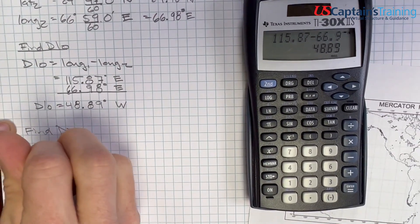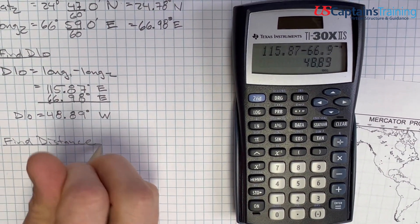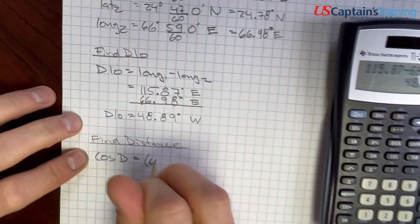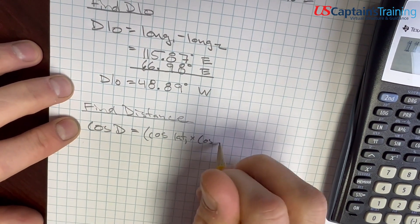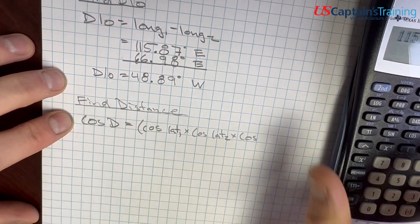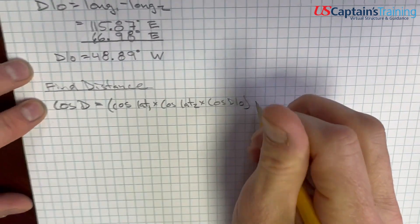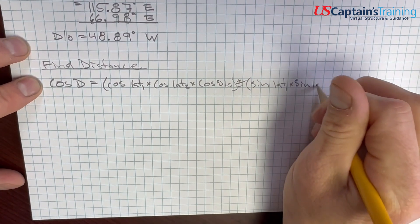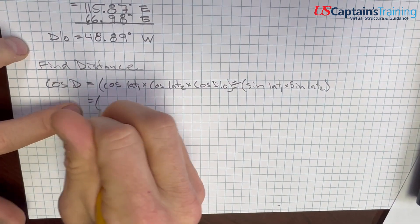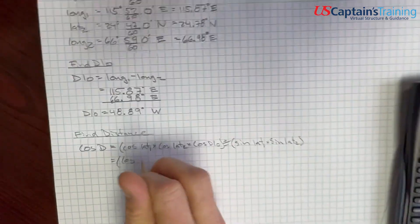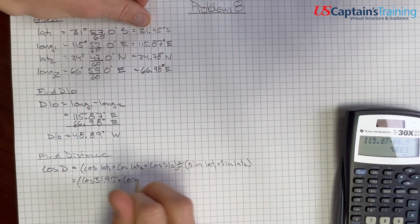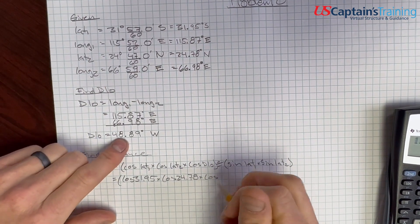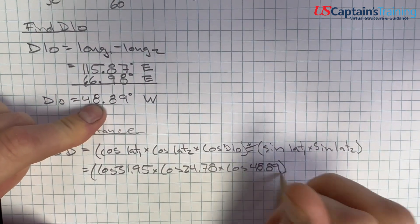Alright, now we need to find distance. Let's find distance. How do we find distance? To find distance, we use this formula. The cosine of distance equals cosine lat 1 times cosine lat 2 times cosine of D-low plus, or maybe minus, sine lat 1 times sine lat 2. Plus or minus, which one?